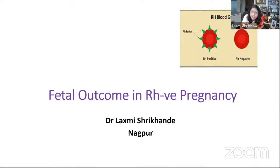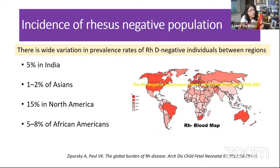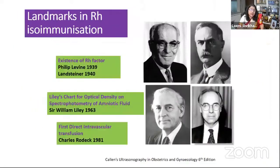My topic of deliberation today is how to optimize the fetal outcome in RH negative pregnancies. We have to worry about RH negative pregnancies because in India, the incidence of RH negative in our population is to the tune of 5%. So we all obstetricians are encountering daily RH negative mothers in our antenatal clinic. Here are a few important landmarks in the history of RH isoimmunization.